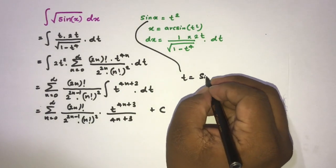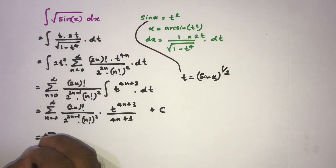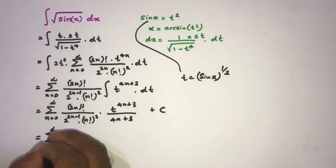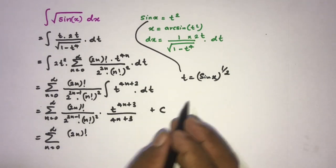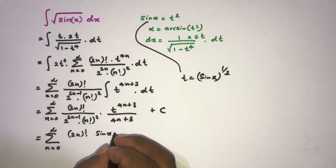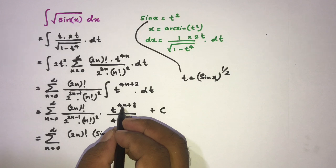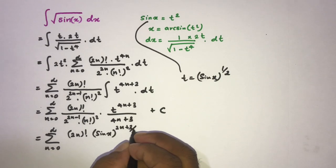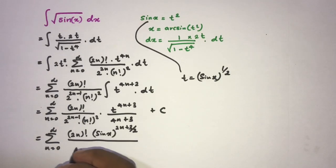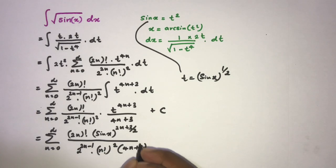Now we back-substitute. Since sine of x equals t squared, we have t equal to sine of x to the power 1/2, so t to the (4n plus 3) becomes sine of x to the power (4n plus 3) over 2. The final answer is the sum from n equals 0 to infinity of (2n)! times sine of x to the power (4n plus 3)/2, over 2 to the (2n minus 1) times (n!)² times (4n plus 3).